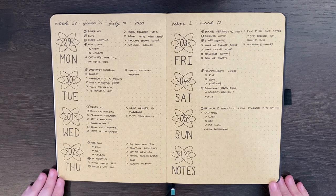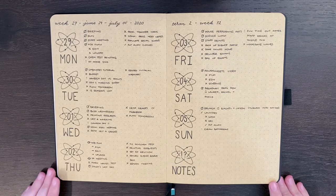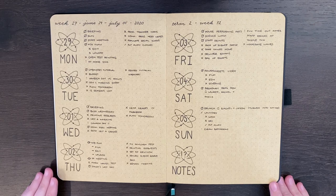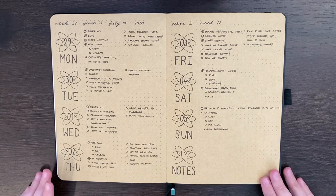Today, I'm going to be setting up in my bullet journal for July 6th through to July 12th. But before we get into that, as per usual, we're just going to have a look at how last week went.